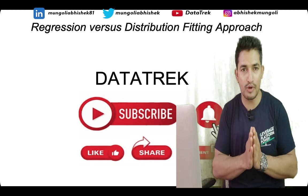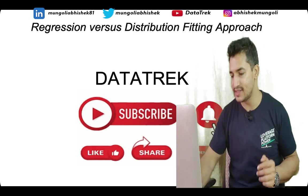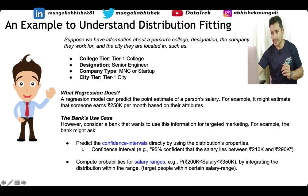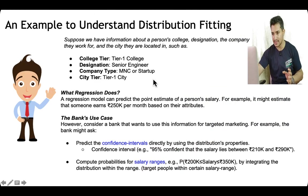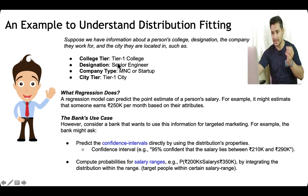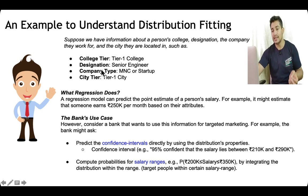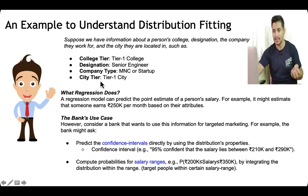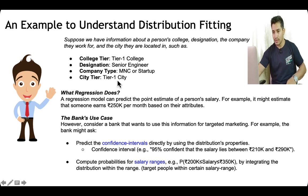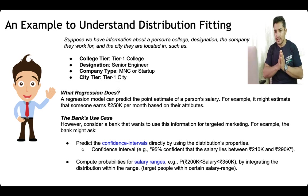Let's understand the two approaches with an example. Suppose we want to estimate the salary of a person given their basic details like the college they studied in, the designation they are currently in, the years of experience, the company they are working for — whether it's an MNC or a startup — and the city they are residing in, whether it's a tier 1 city and so on.